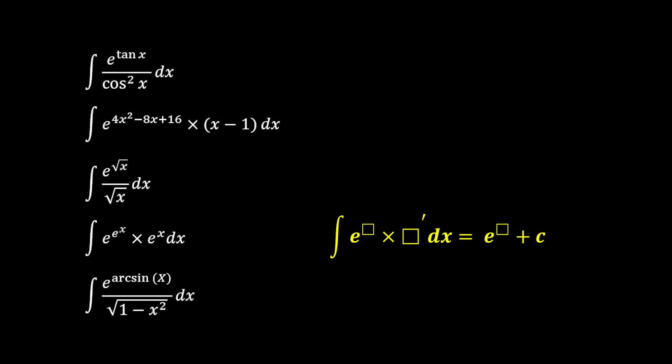If the integral form of the exponential function is e to the power of box times the differentiated form of the box, then the answer is simply e to the power of box. And you can plug in the contents in the left box directly into the answer box on the right. Then your answer is just e to the power of box plus c.